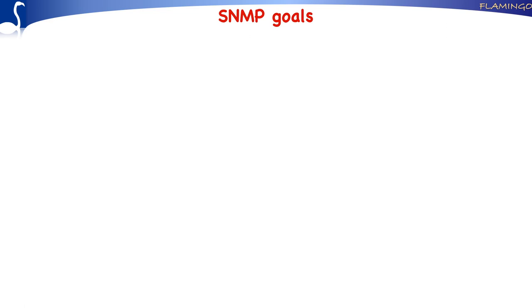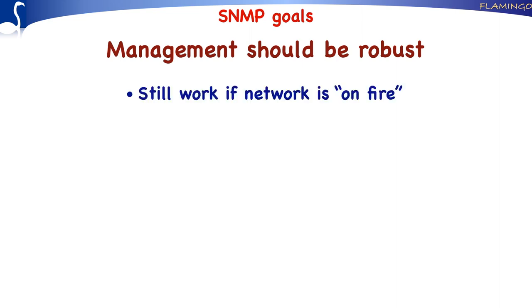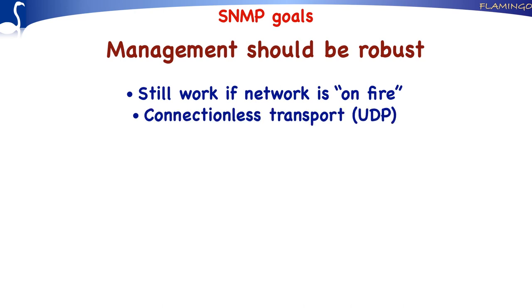The final goal the SNMP designers had in mind is that management should be robust. This means that network management should still function if the network is, between quotes, on fire. So even in situations where many things go wrong, the network manager should still have control of the network. For that reason, the designers of SNMP decided to run SNMP over the connectionless transport protocol UDP. The idea was: if something goes wrong in the network and many packets get lost, you can simply send the same management command many times. At least one of these commands will then arrive at the agent system.